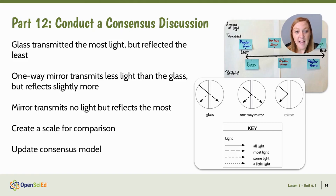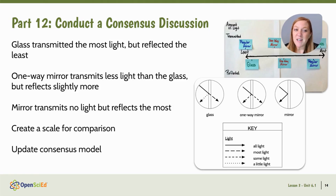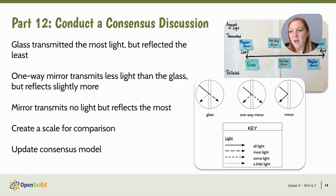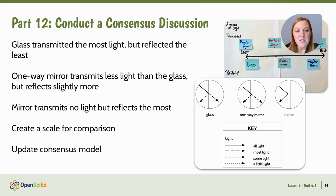We update our class consensus model and science ideas chart with the information that glass transmits the most light but reflects the least, a mirror transmits no light but reflects the most, and the one-way mirror transmits less light than glass but reflects slightly more — so it behaves like both the mirror and the glass. We create a scale for comparison, and then update our consensus model to show that the amount of light we start with and the amount we end with will change.